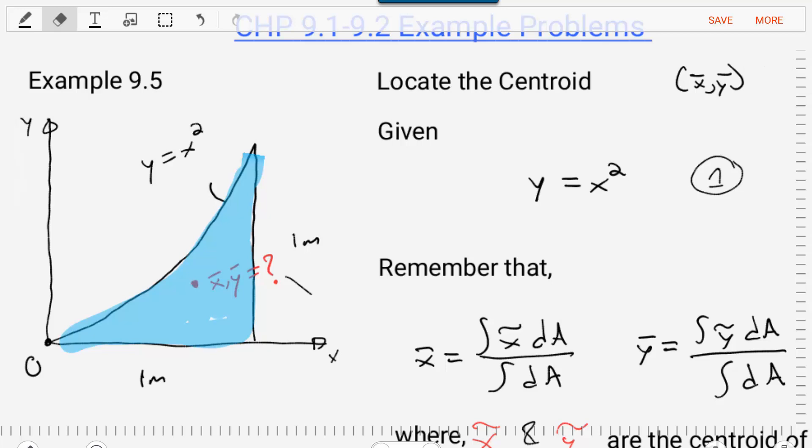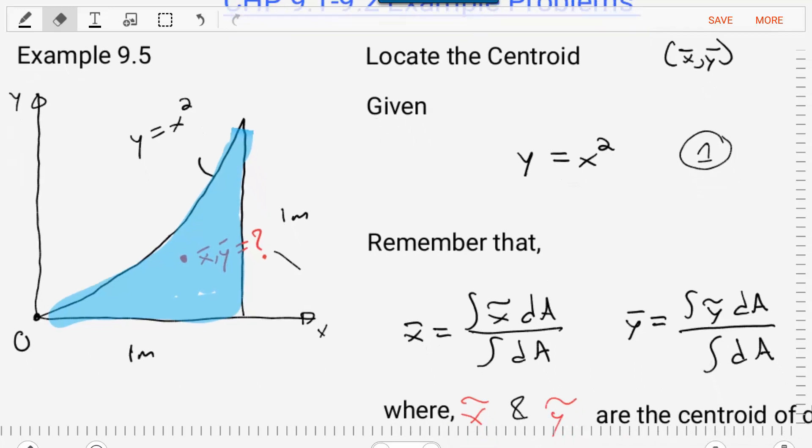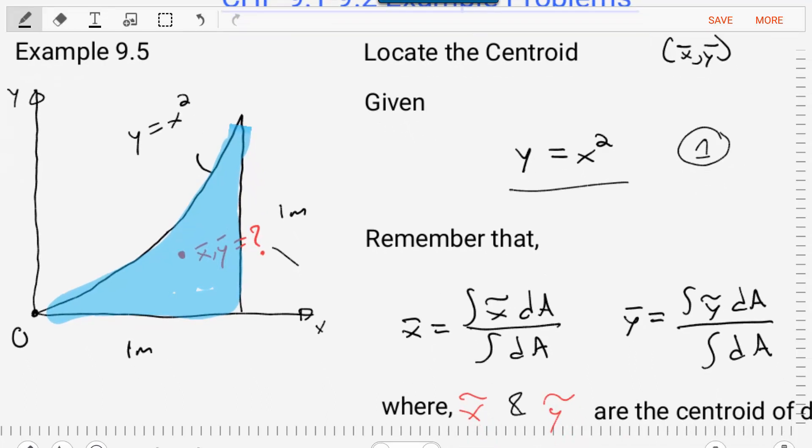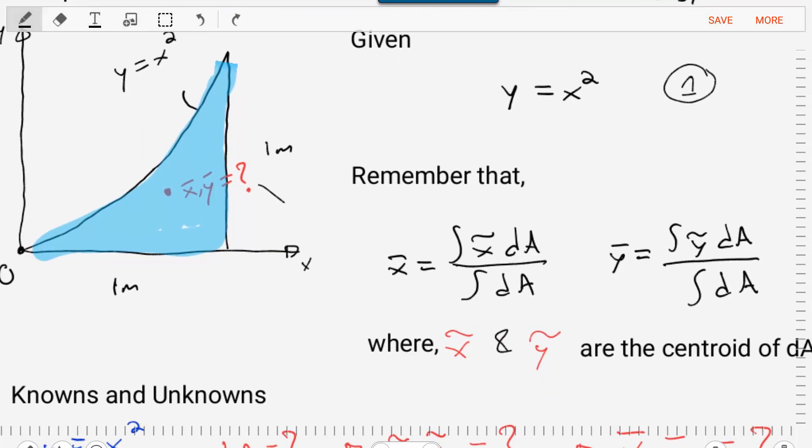Let's start to solve this problem. In solving centroid problems, there's basically three things that we need to do. We need to define the interval that we're integrating over, define the differential area DA, and then do the integration to solve for X bar and Y bar. Remember that X bar equals the integral of X tilde dA divided by the integral of dA, and Y bar is similar, where X tilde and Y tilde are the centroids of our differential area.